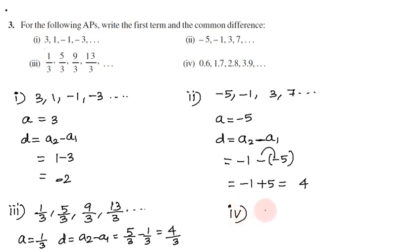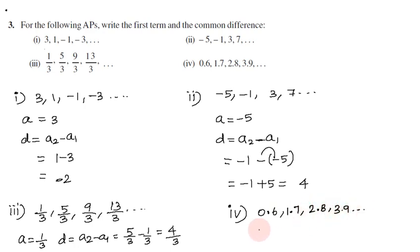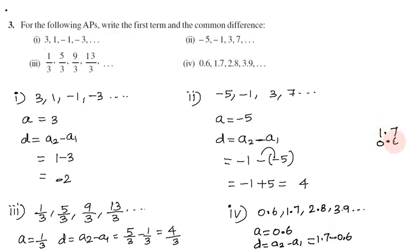Fourth subdivision: 0.6, 1.7, 2.8, 3.9, etc. First term is 0.6. Common difference = a2 minus a1 = 1.7 minus 0.6 = 1.1.